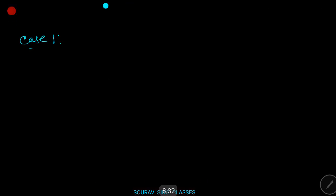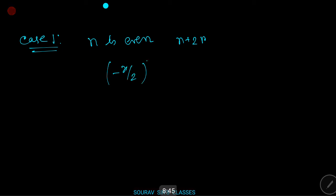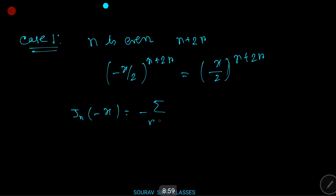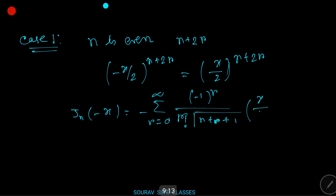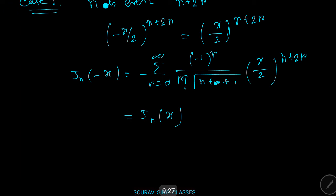Case 1 — if n is even, then n+2r is even, therefore (−x/2)^(n+2r) = (x/2)^(n+2r). Thus equation 2 becomes Jₙ(−x) = Σ [(-1)^r / (r! · Γ(n+r+1))] · (x/2)^(n+2r) = Jₙ(x). Since f(−x) = f(x), hence Jₙ(x) is an even function.